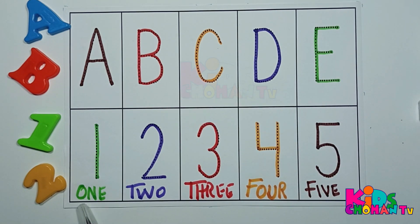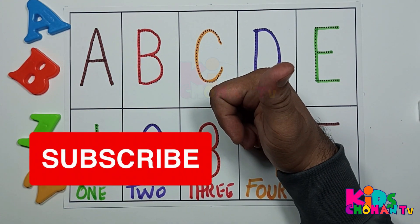Numbers. One: O-N-E, one. Number two: T-W-O, two. Number three: T-H-R-E-E, three. Number four: F-O-U-R, four. Number five: F-I-V-E, five. Thank you kids. Don't forget to like and subscribe.